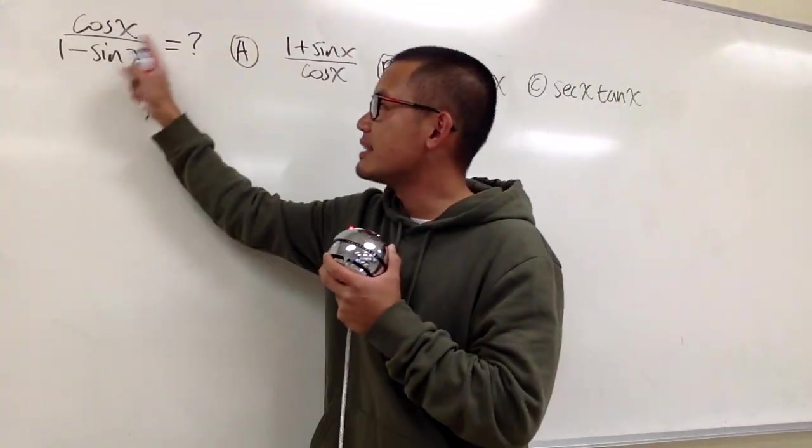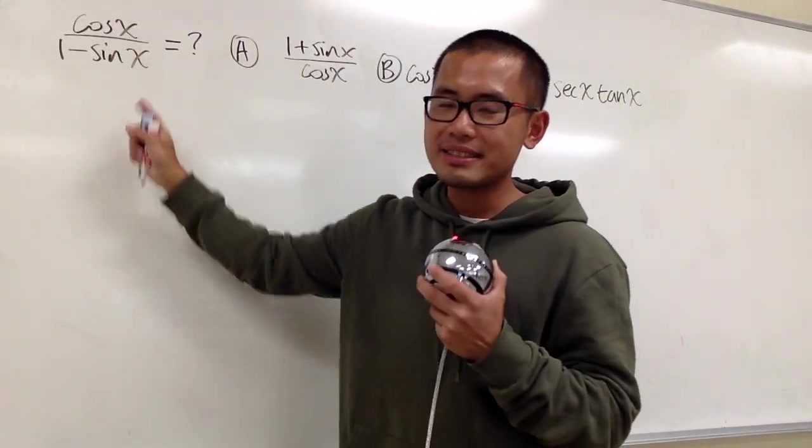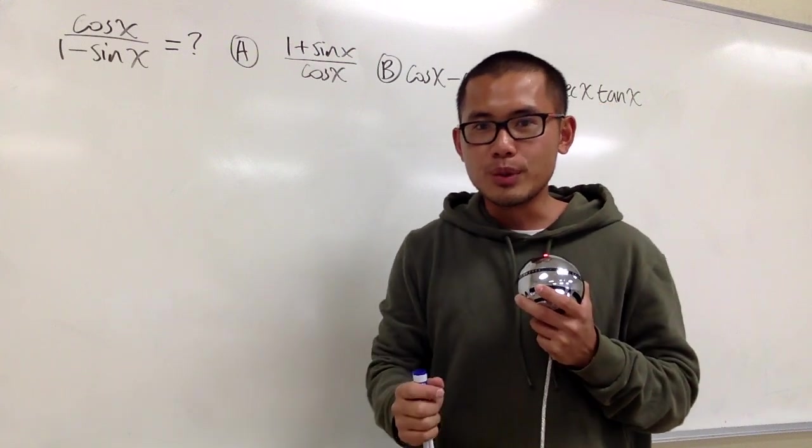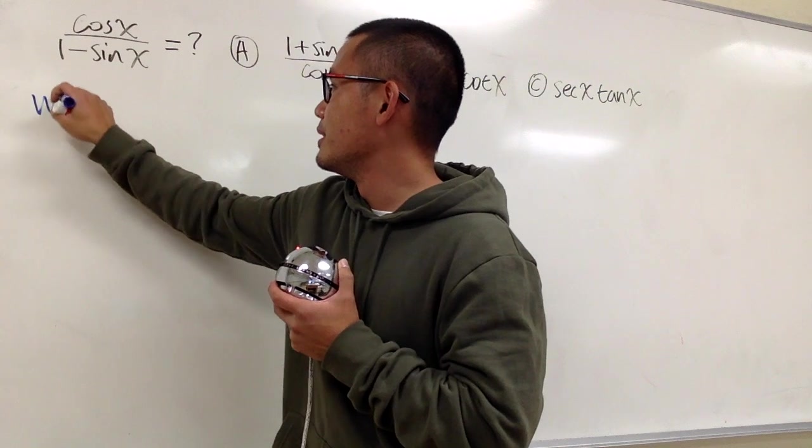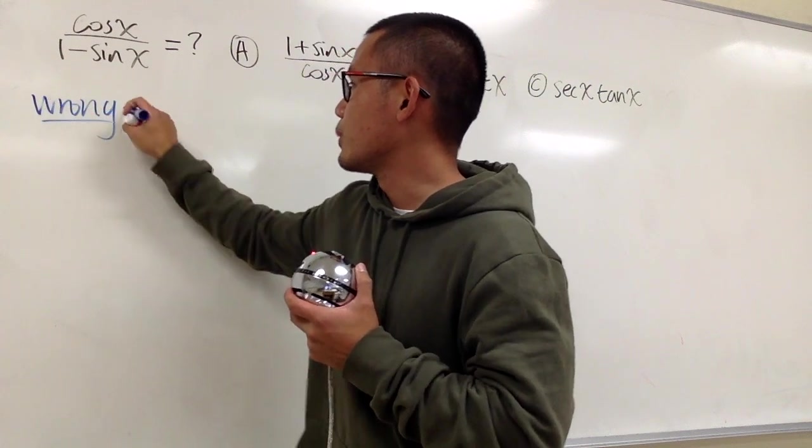Let's talk about this one. We have cosine x over 1 minus sine x. However, before I show you the right way to do this, let me show you a common mistake. This is just going to be incorrect. This is the wrong way to do it.